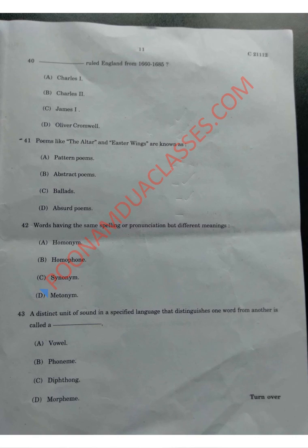Question number 40: who ruled England from 1660 to 1685? The correct answer is Charles II during the Restoration period. Charles II spent nine years in exile after the execution of his father Charles I, until 1660 when he was invited back to London and restored to the throne. Charles II died after a stroke in 1685.